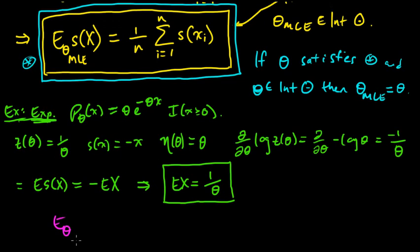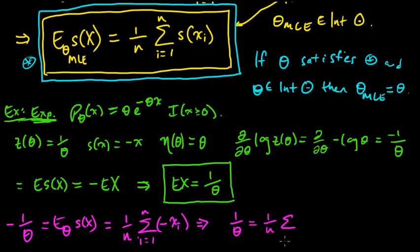And let's write what this means. So the MLE under theta, this is just the same as before, that's minus the mean, which we already know is that, and that equals one over n times the sum i from one to n, and our statistic is minus x, so that's minus x_i. So the minuses cancel, and we get that that implies one over theta equals one over n sum i from one to n x_i, which implies theta MLE, assuming it exists and all this stuff, is one over the sample mean, one over this sum from one to n of the x_i's.